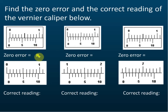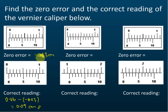What's the zero error for this one? The zero error is negative 0.03 — one, two, three. Then the reading is one, two, three, four, five, six — so 0.06 minus the negative zero error gives 0.09. How about this one?